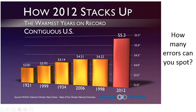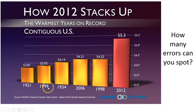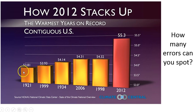Let's look at our next offender — climate change. This is a graph showing the hottest years on record. It starts out with 1921 and then moves its way up. But look — the years are all out of whack. This graph is trying to make it seem like 2012 was the hottest year ever and that it's getting hotter and hotter. But really, when you arrange the dates in order, it's not necessarily getting consistently hotter.